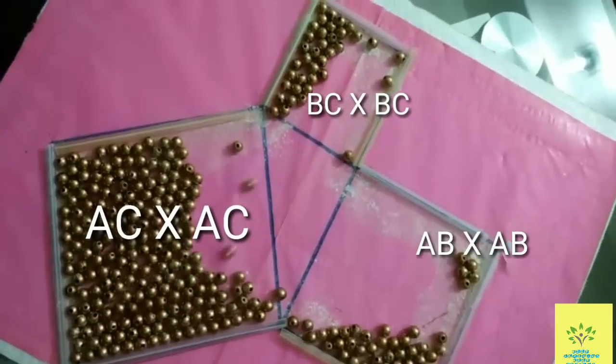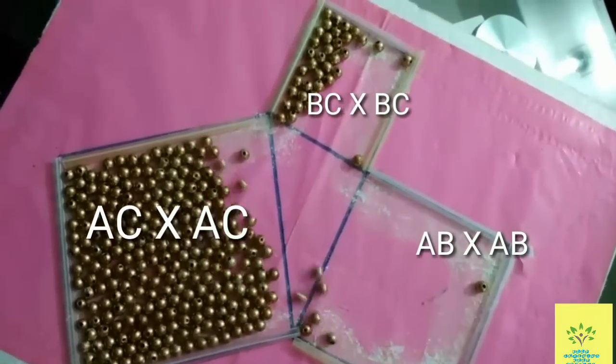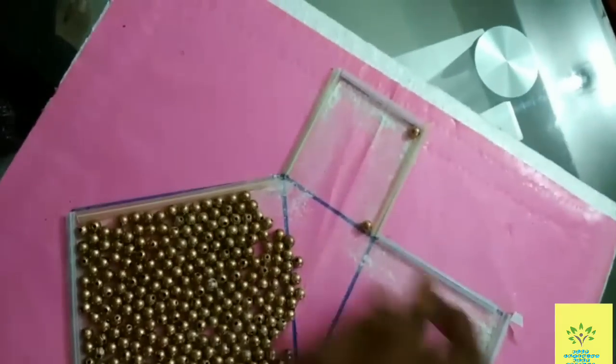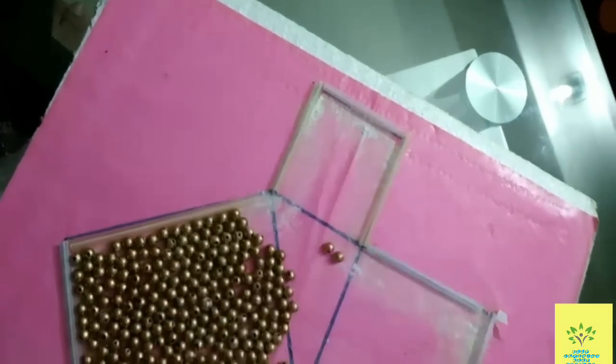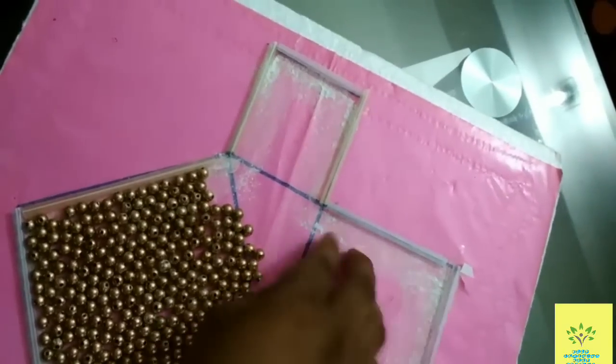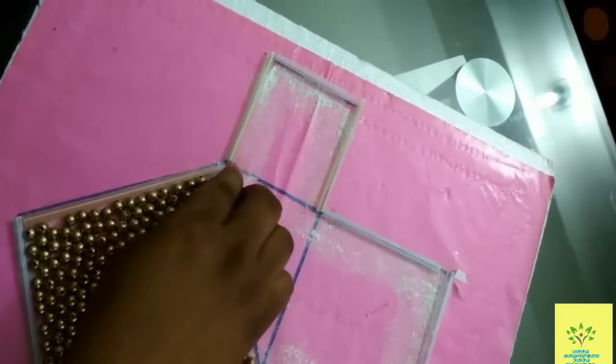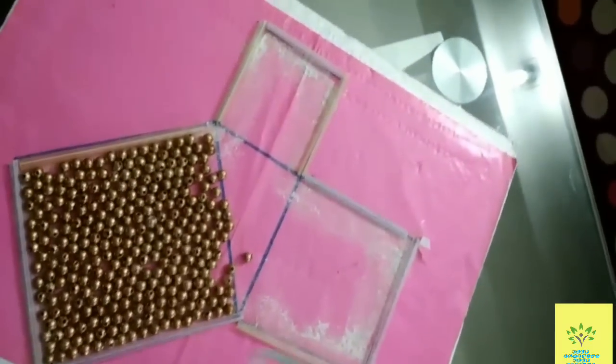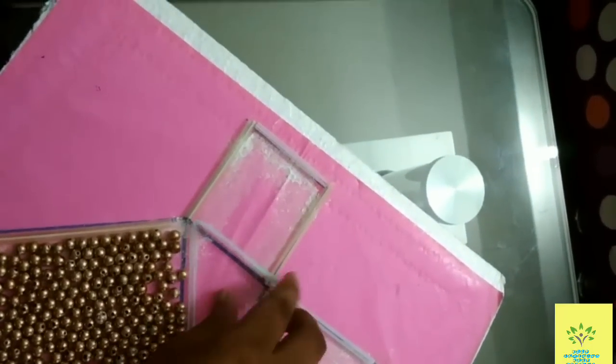AC². You can see that the same number of beads that filled both smaller squares can be occupied in the biggest square. It means AC² = AB² + BC². By this working model, we can prove this.